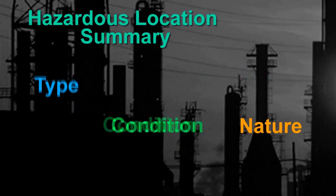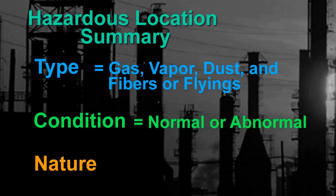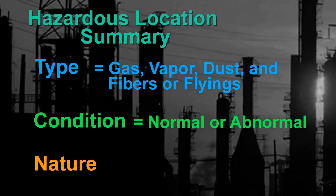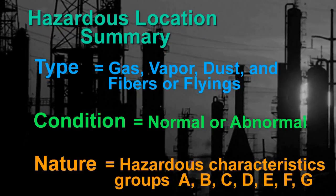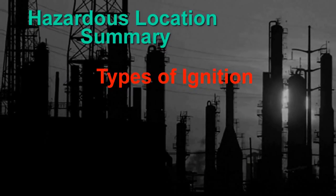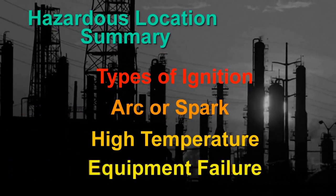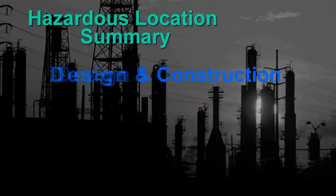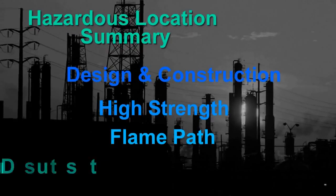In summary, NEC hazardous locations are classified in three ways: type, condition, and nature. The types are gas, vapor, dust, and fibers or flyings. The conditions are normal or abnormal, indicating the probability of hazardous materials in the atmosphere. The nature dictates the explosive pressure and flammability of the hazardous substance, indicated by letters A through G. All equipment within hazardous locations must protect against three predominant types of ignition — arc or spark, high temperature, and equipment failure. Within NEC-rated materials, the design and construction must have high strength, a path for explosive materials to be extinguished, or provide protection from dust buildup.